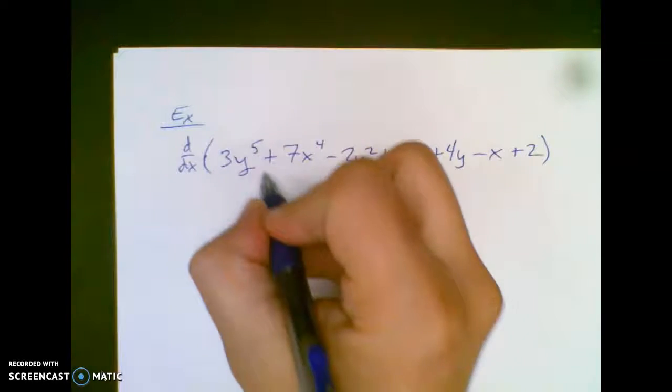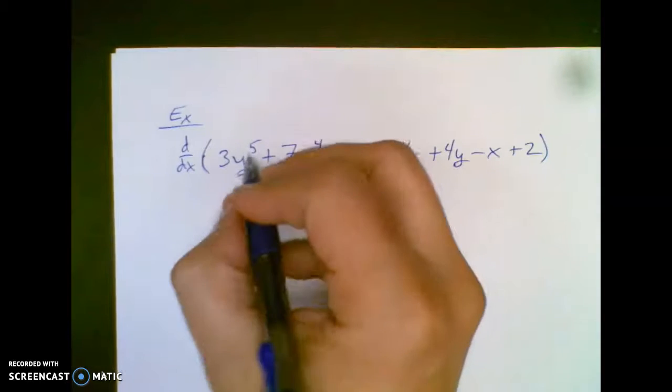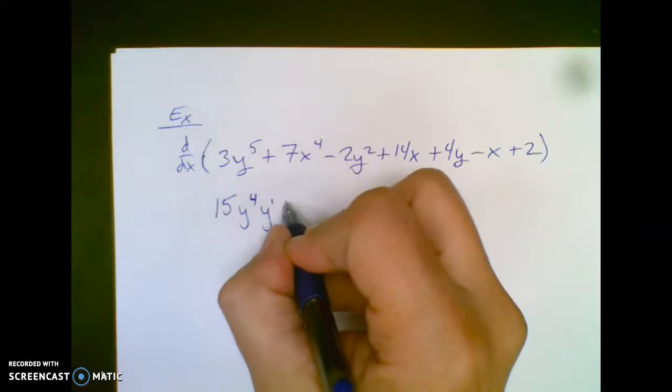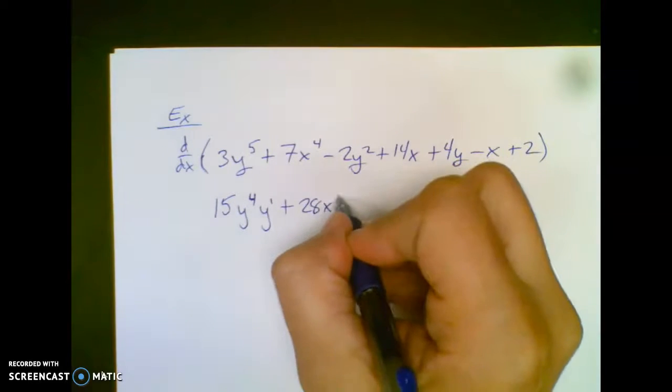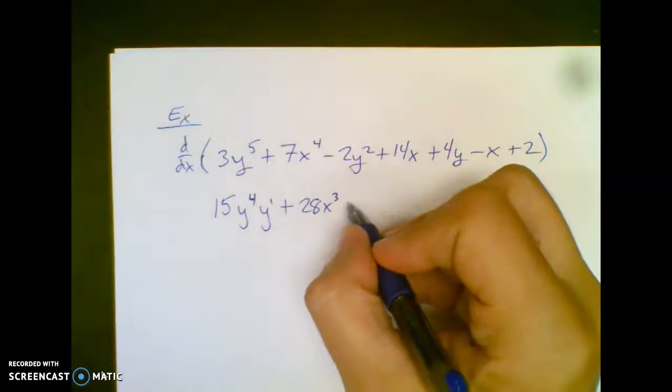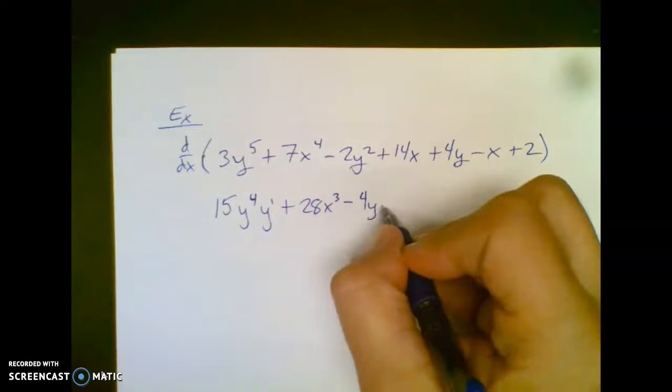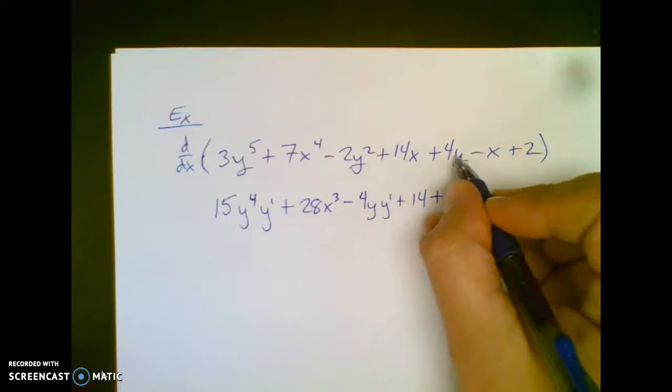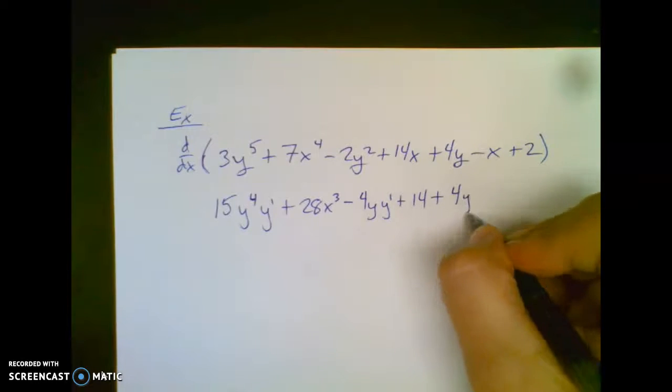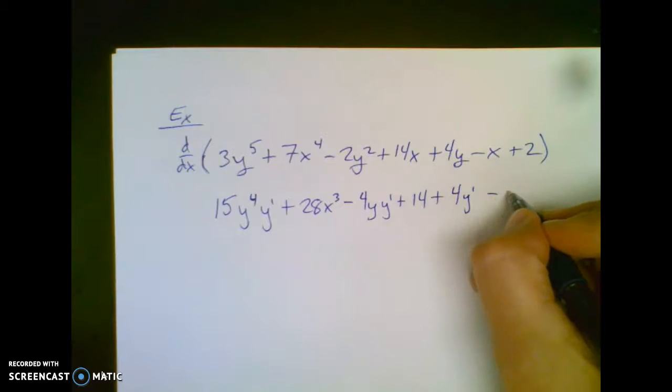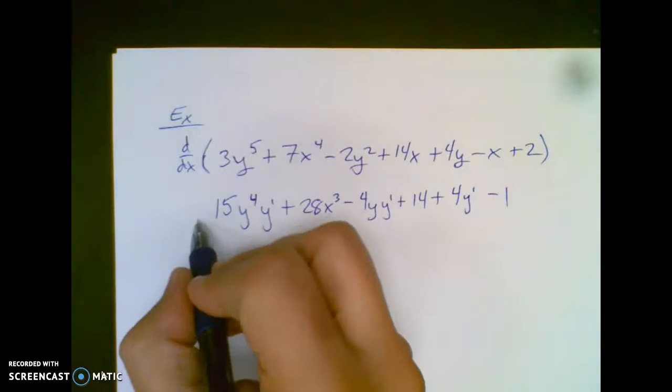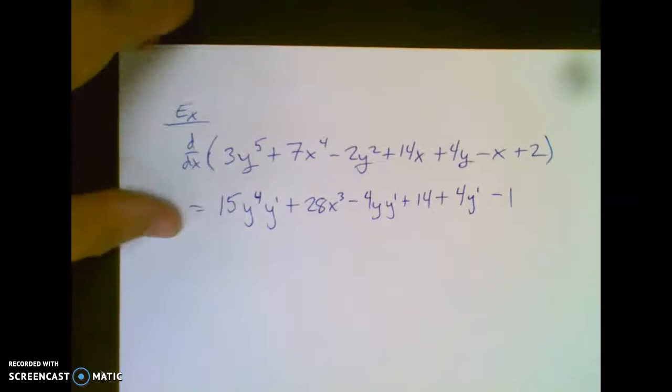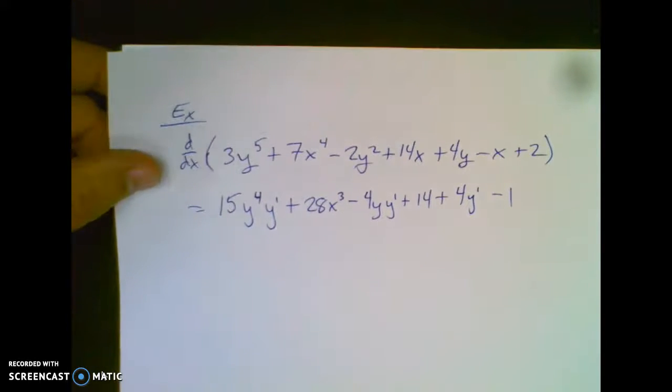I'm going to do each one. I'm going to let you pause now. All right. Now that you're back after doing the problem, I'm going to start doing this. So I got 15y⁴, Ninja rule, y prime, plus 28x³. Don't need anything because it's an x and it matches. Minus 4y, Ninja rule, y prime. 14 is the derivative of 14x. The derivative of 4y is 4, but you have a penalty because you took the derivative of y with respect to x. And minus 1. And then I still have plus here. That's the derivative. Crazy, right? We're not solving for y prime. That's not really the derivative. That's just differentiating with respect to x.